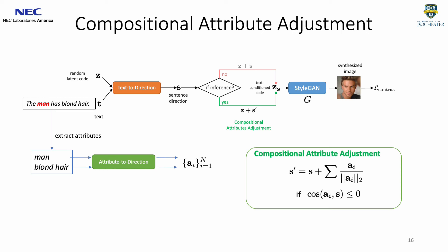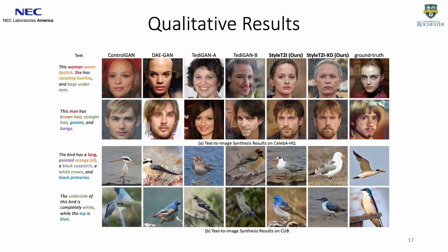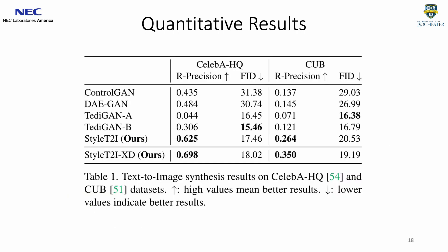We conducted experiments on two datasets, CelebA-HQ and CUB, where images generated by Style T2I are in higher fidelity and are better aligned with the attributes in the text compared with previous methods. The quantitative results also show that Style T2I achieves better precision for image-text alignment with comparable FID results for image quality.